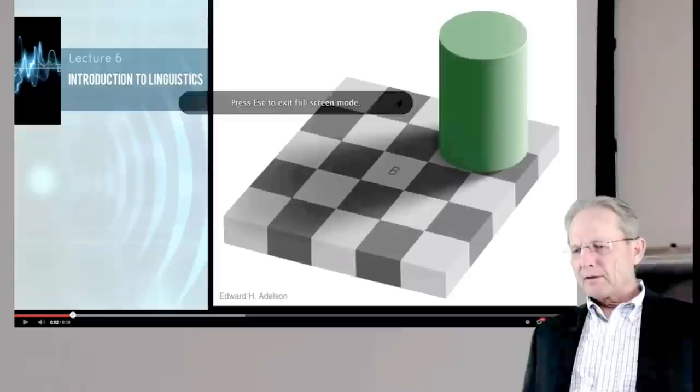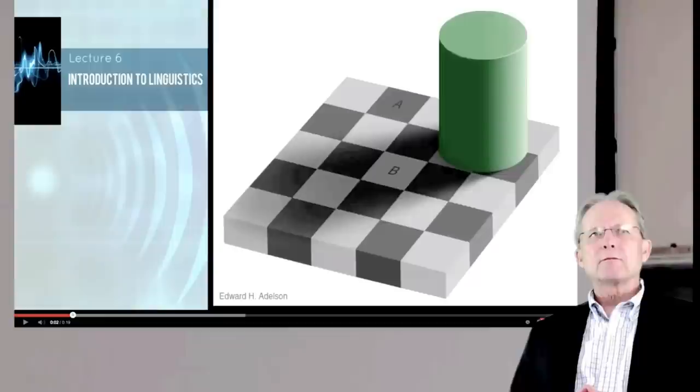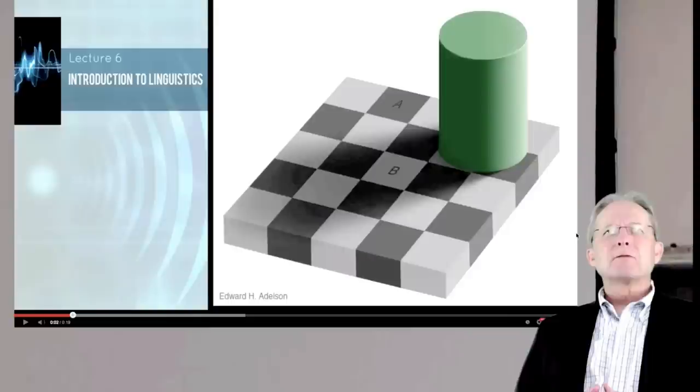The checkerboard here has two letters on it, each letter on a different square on the checkerboard. The question is, are those the same colors? Do those two squares have the same color?